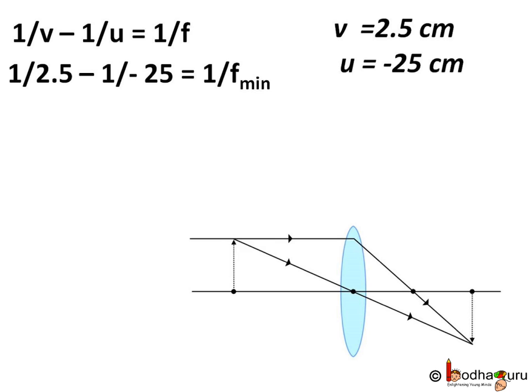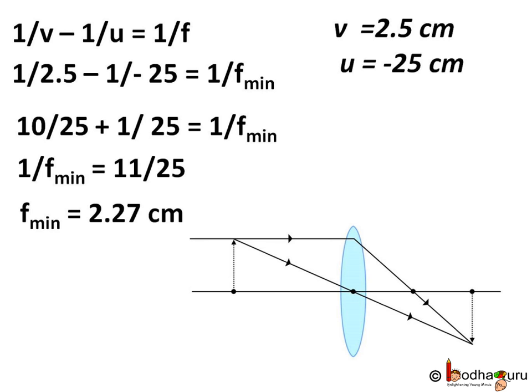Putting these values of u and v in the equation, we get 1/2.5 - 1/(-25) = 1/f_min, where f_min is the minimum focal length of the eye lens. Simplifying, 1/f_min = 11/25. Thus f_min = 25/11, which is equal to 2.27 cm.